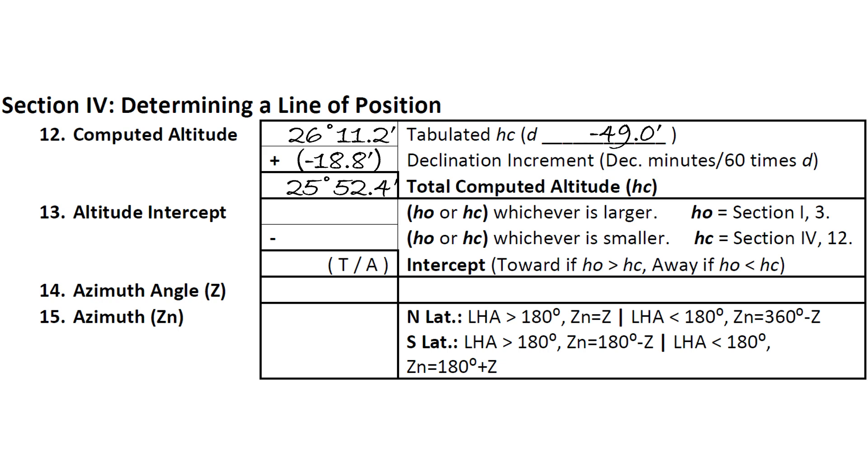Look at the HO and HC on your sight reduction form. The larger number goes in the first box, followed by the smaller number in the one beneath it. This will ensure that the difference will be a positive value.